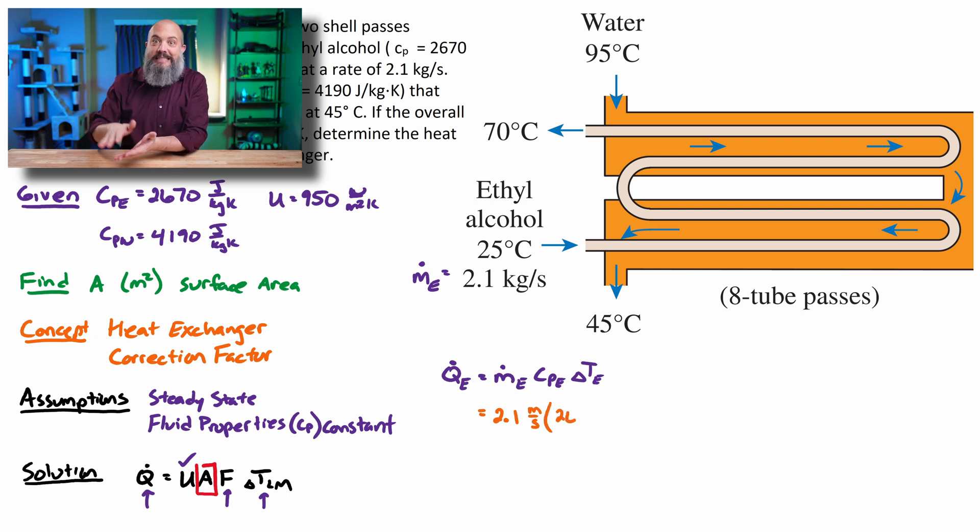So technically specific heat, C_P, it changes as temperature changes. So as the ethyl alcohol heats up from 25 to 70, C_P will change a little bit, but not very much. So we're going to assume that the 2670 is constant. And we plug in the two temperatures, exit minus inlet, 70 minus 25.